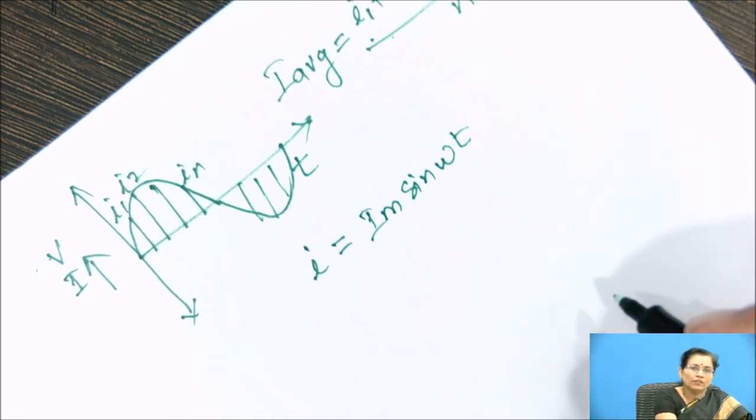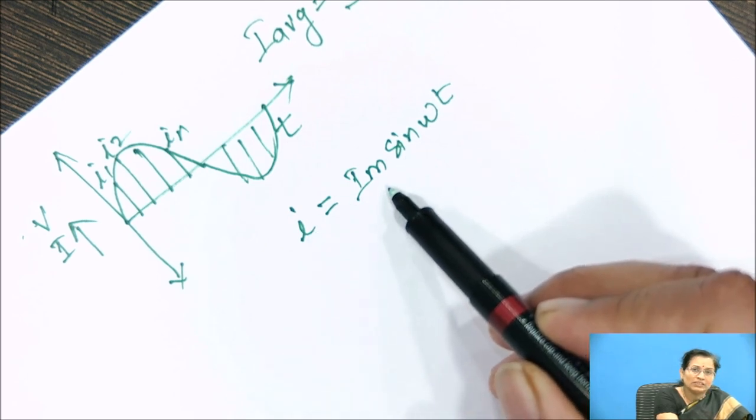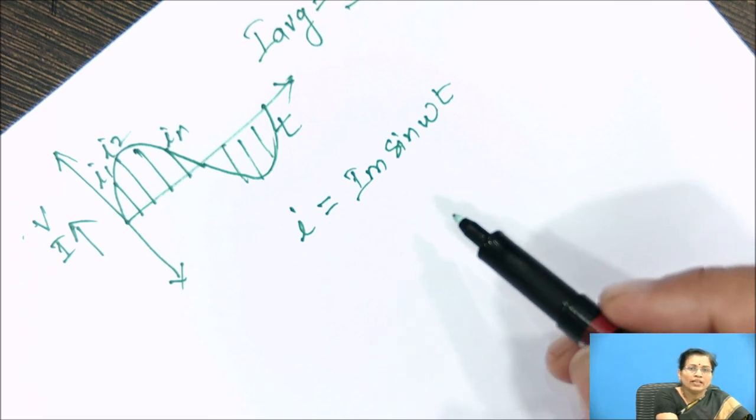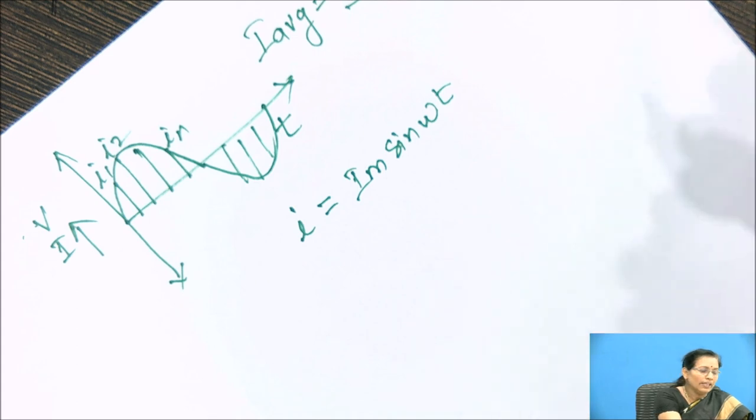This is the mathematical equation for the current where I is the instantaneous current, Im is the maximum current, and omega t is the theta where omega is the angular frequency, that is given by 2 pi f.